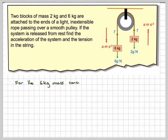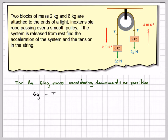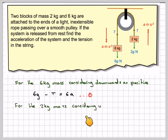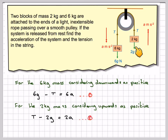For the 6kg mass, considering downwards as positive, we have 6g minus T equals 6a. We call that equation 1. For the 2kg mass, considering upwards as positive, we have T minus 2g equals 2a. We call that equation 2.